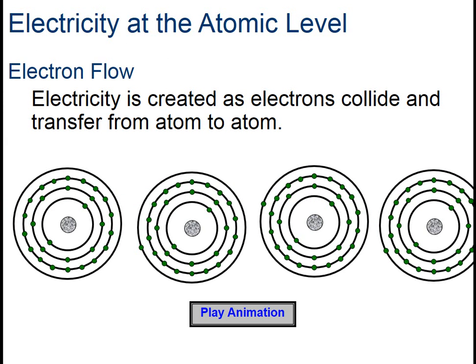Electricity is created as the electrons collide and transfer from one atom to another. This is how we have electrical current, also called dynamic electricity, which is in contrast to static electricity, the unmoving accumulation of electrical charge.